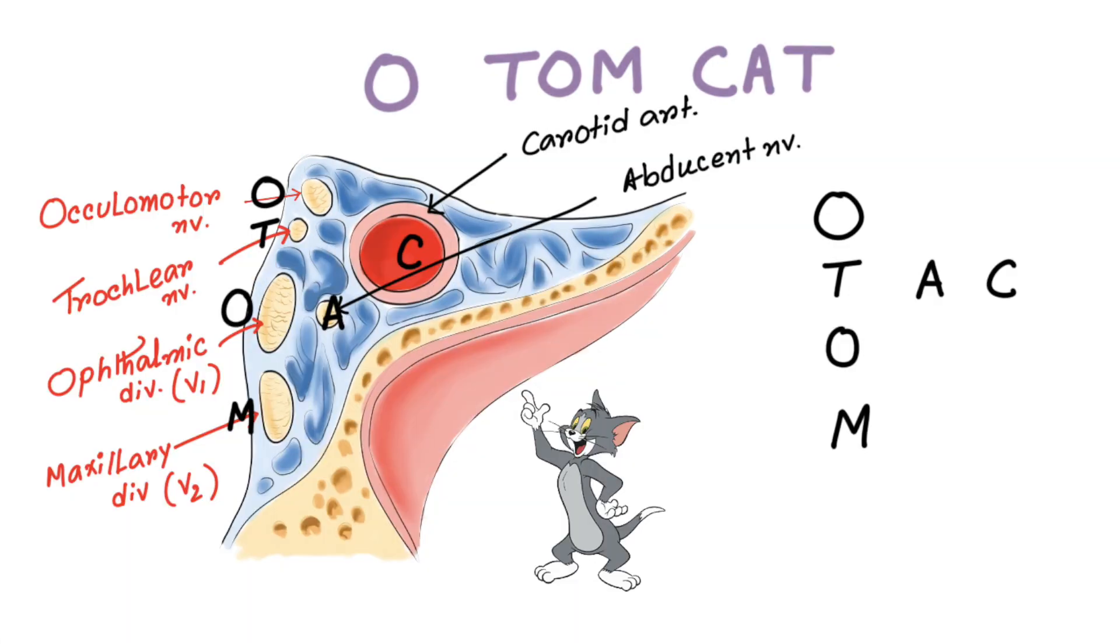O stands for oculomotor nerve, T stands for trochlear nerve, again O stands for ophthalmic division of trigeminal nerve, M stands for maxillary division of trigeminal nerve, C stands for carotid artery, and A stands for abducent nerve.